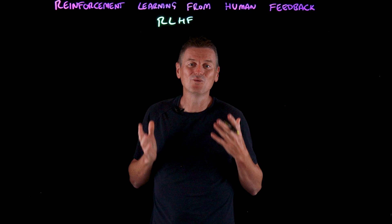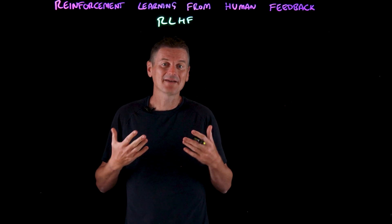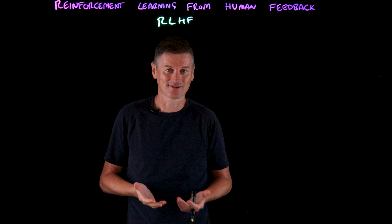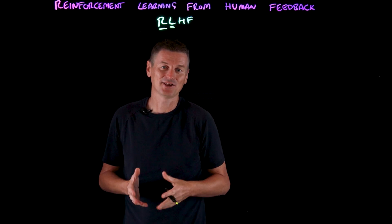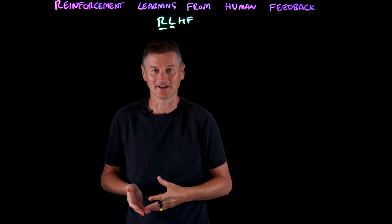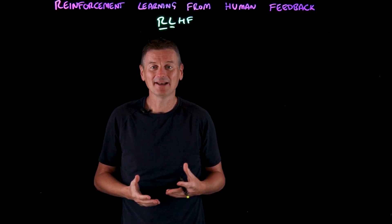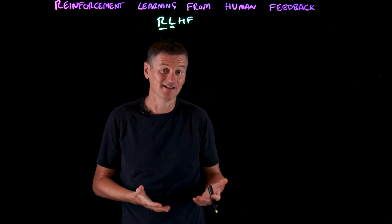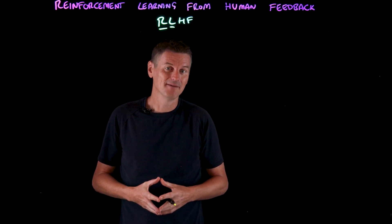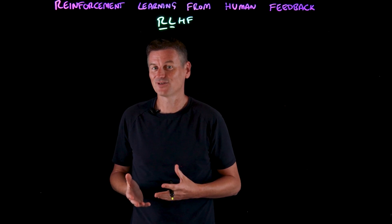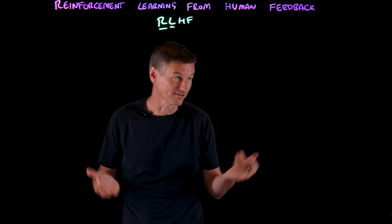So let's get into what RLHF is, how it works, and where it can be helpful or a hindrance. We'll start by defining the RL in RLHF, which is reinforcement learning. Conceptually, reinforcement learning aims to emulate the way that human beings learn. AI agents learn holistically through trial and error, motivated by strong incentives to succeed. It's actually a mathematical framework which consists of a few components.